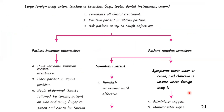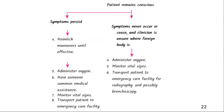When a foreign body enters the trachea or bronchus, such as a tooth or dental instrument, immediately stop the dentistry. Position the patient in a sitting posture to facilitate coughing. Instruct the patient to try to cough the object out, as coughing may expel the aspirated material if the airway is partially obstructed. For a conscious patient with persistent symptoms, perform Heimlich maneuvers to expel the foreign body. Administer supplemental oxygen to maintain oxygenation. Call medical help and continuously monitor the patient's vital signs.